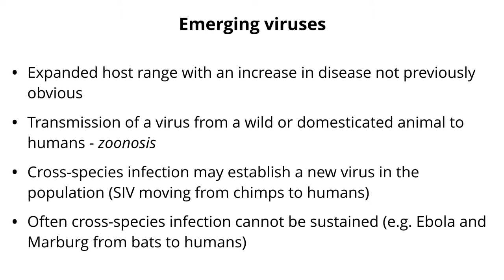An emerging virus could have an expanded host range with a disease not previously obvious. It can involve transmission from a wild or domesticated animal to humans — this we call a zoonosis. A zoonotic infection is one that goes from animals to humans. In fact, most of the emerging viruses we see today are emergences from animal reservoirs.